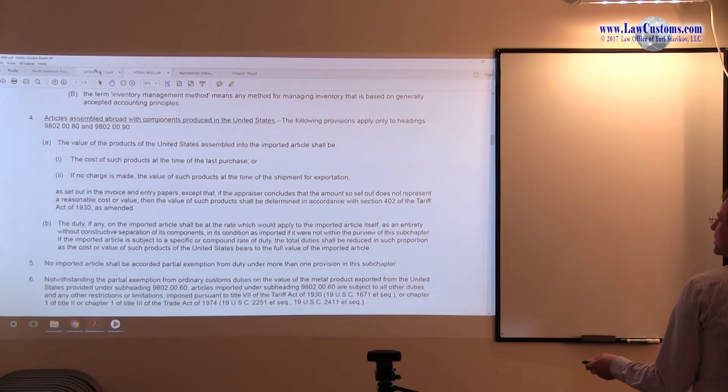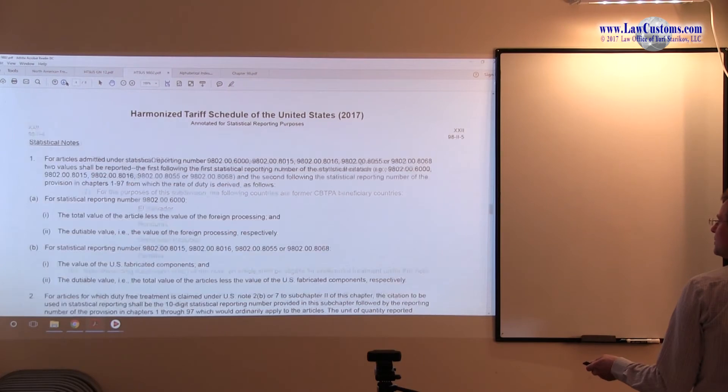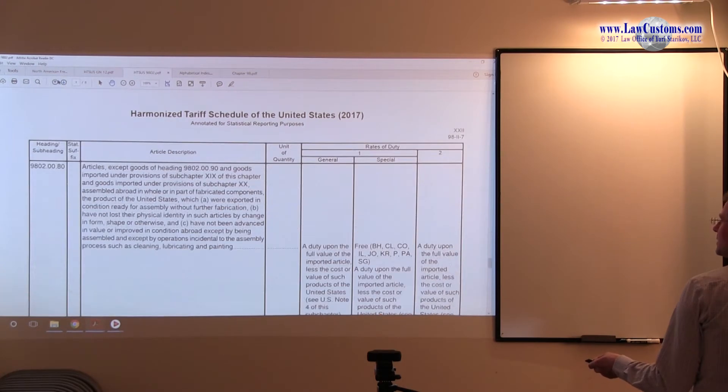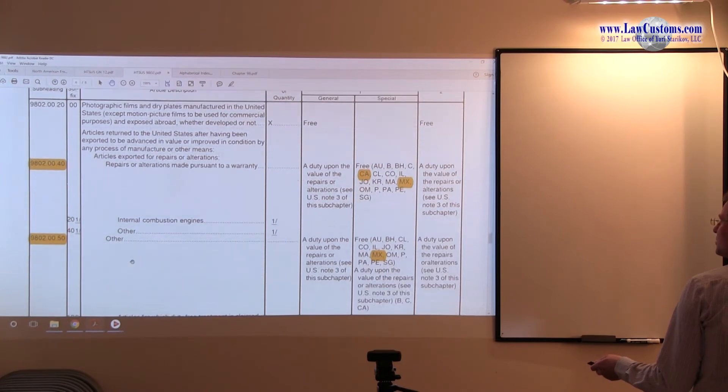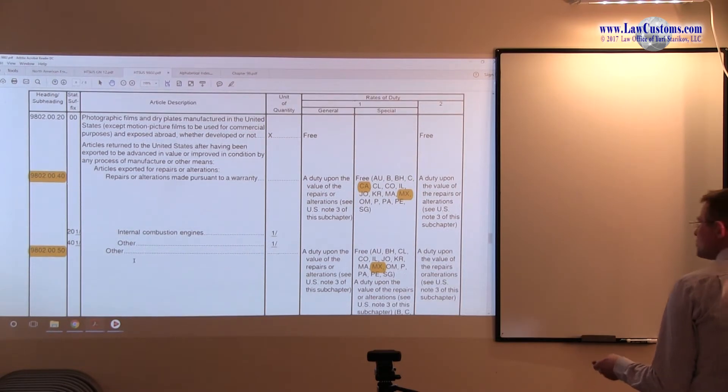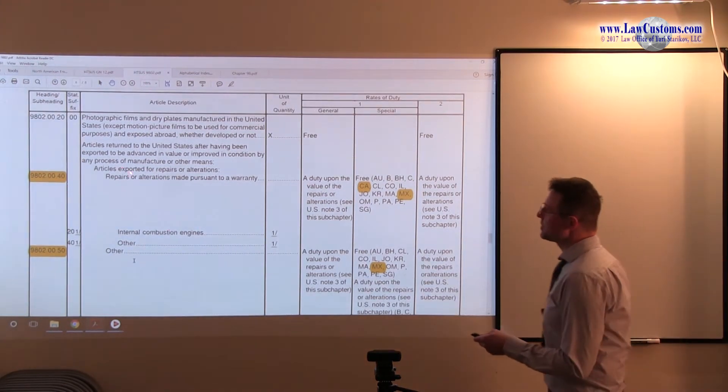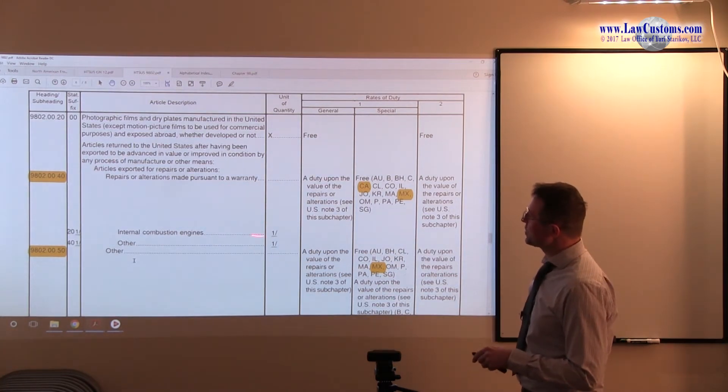And it plays out in the HTSUS table. See, chapter 9802 doesn't only provide for Mexico and United States. But here is how it plays out in the HTSUS table. So you have repairs and alterations provisions. You have a warranty and without warranty, right? And you have Canada, Mexico, Canada, and Mexico here.